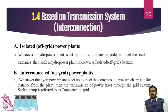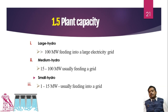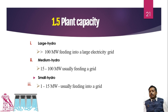Next is plant capacity. If we have a huge reservoir or large water availability, we can produce a lot of electricity. According to generation capacity, we have bifurcated power plants into types. First is the large hydro power plant — a power plant producing more than 100 megawatts is called a large hydro power plant.